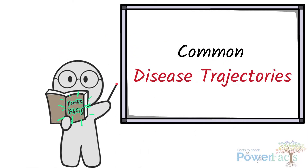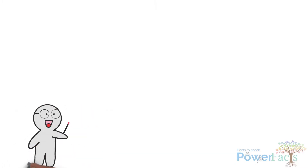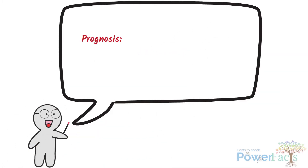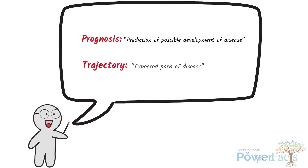Common Disease Trajectories. Here are some important medical terms. Prognosis is the prediction of possible development of a disease. Trajectory is the expected path of a disease.